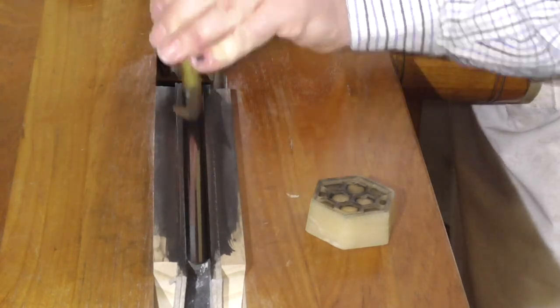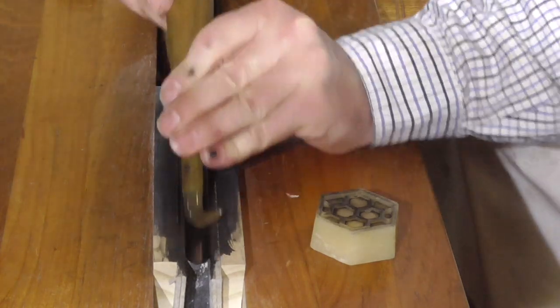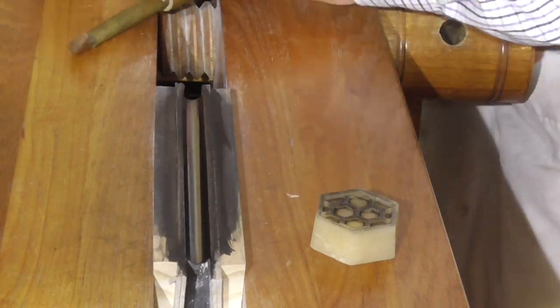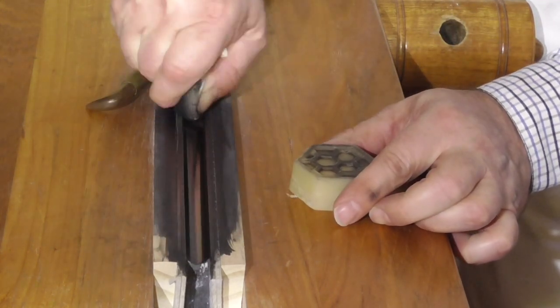It's really hard to see in the video. However, I am ever so slightly rotating the burnisher each time I go back and forth, moving it up the edge so that the whole edge is polished.